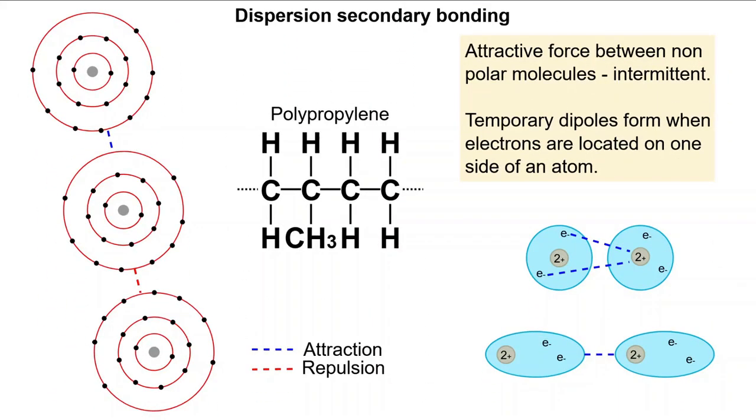The last, being significantly weaker than the two preceding, is dispersion bonding. This type of bonding is intermittent. That is, they are stronger and weaker, depending on the location and circulation of electrons.